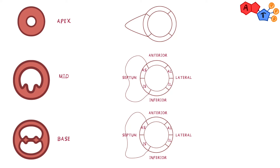Now at the apex, instead of using six segments, we can divide it into four segments: the anterior, the lateral, and the septal segments. You can now see that we have divided the heart chamber anatomically, and this anatomic segmentation is important to understand heart ischemia.